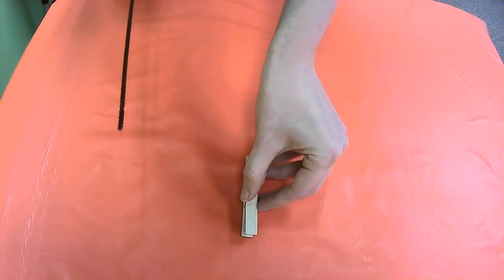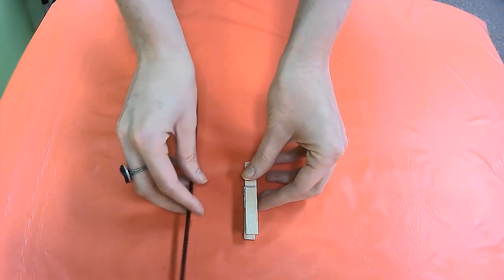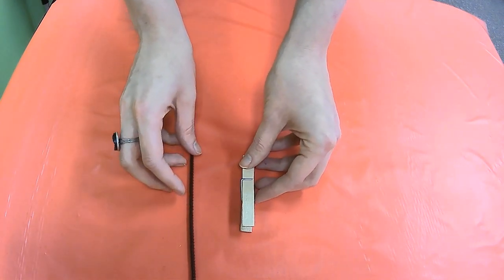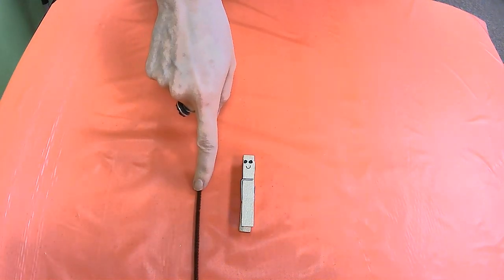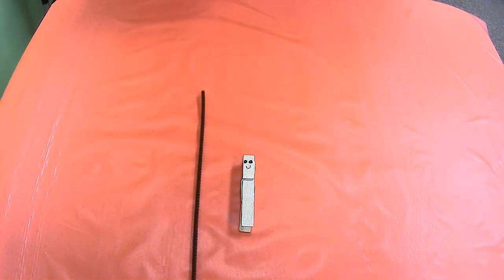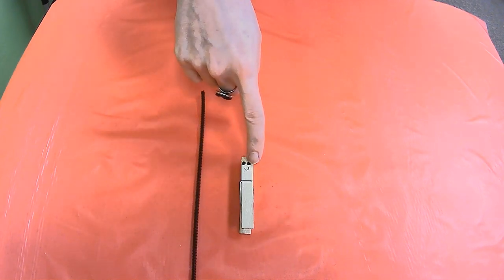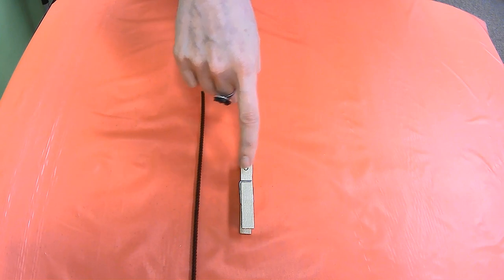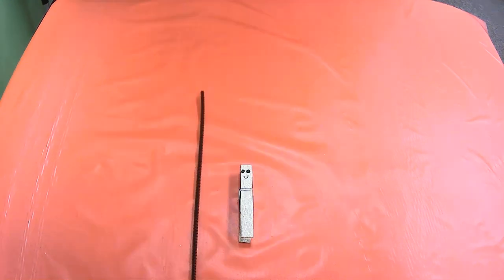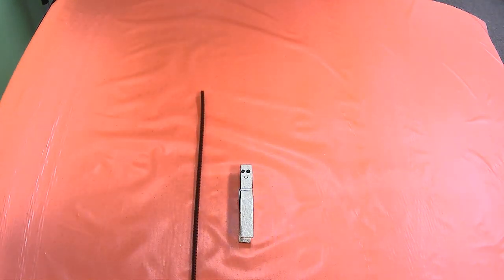While we wait for our coffee filter wings to dry, let's go ahead and get out our clothespin and pipe cleaner or chenille stem. These are going to compose the body and antenna of your butterfly. You can decorate the clothespin body however you would like. I have simply added two eyes and a smiley face for my butterfly, but you can decorate your clothespin however you would like.